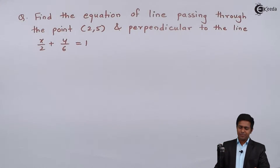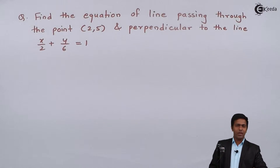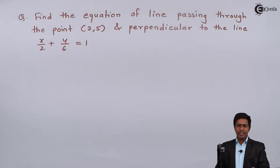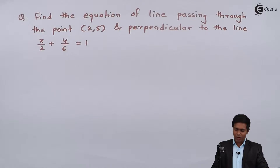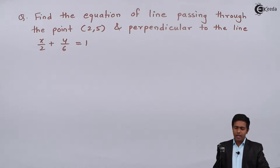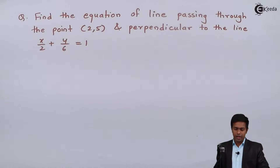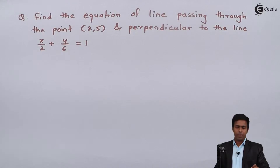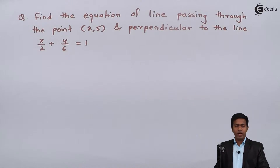Here in this problem we have to find the equation of the line passing through the point (2, 5) and perpendicular to the line x/2 + y/6 = 1.